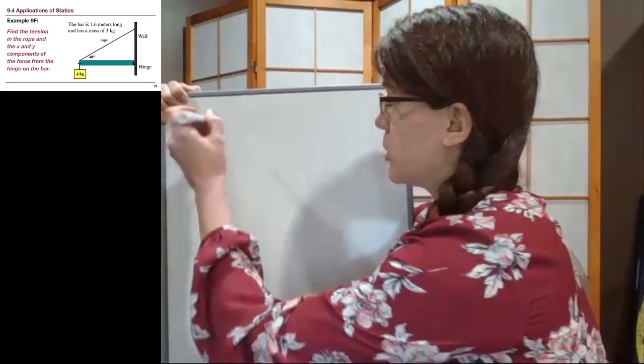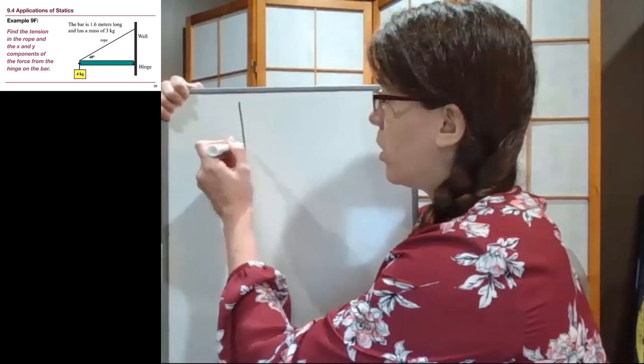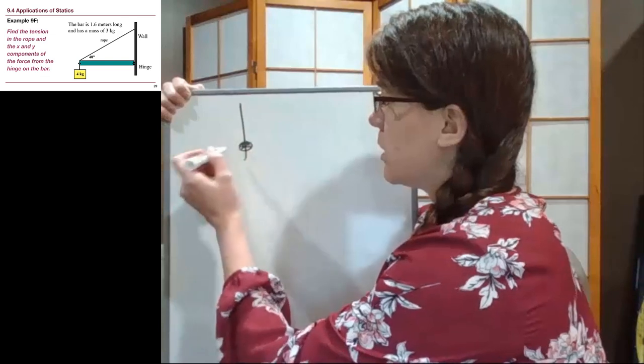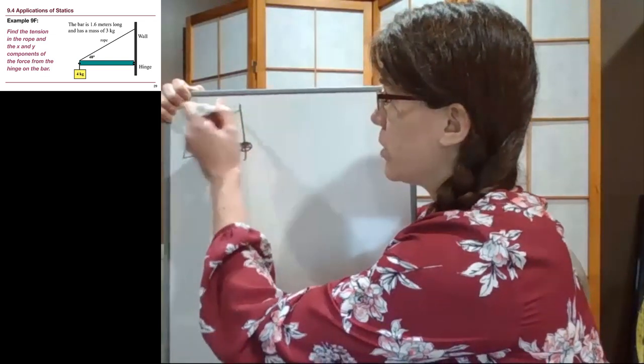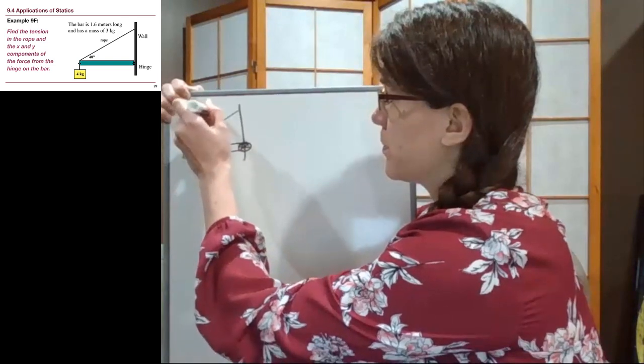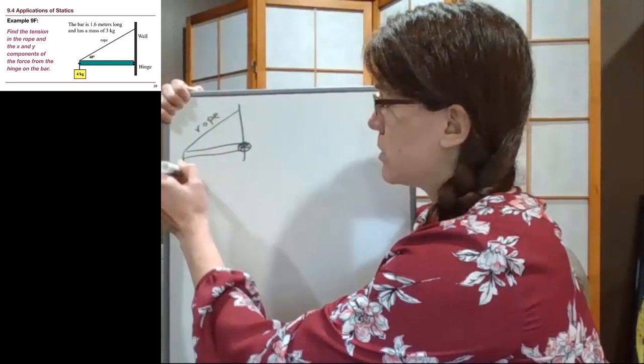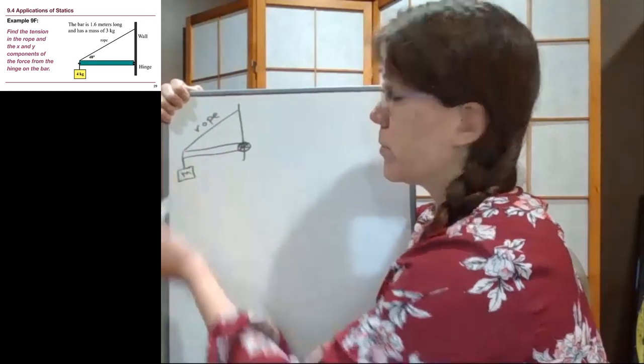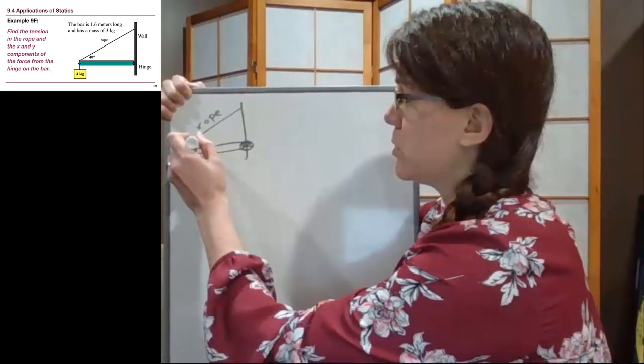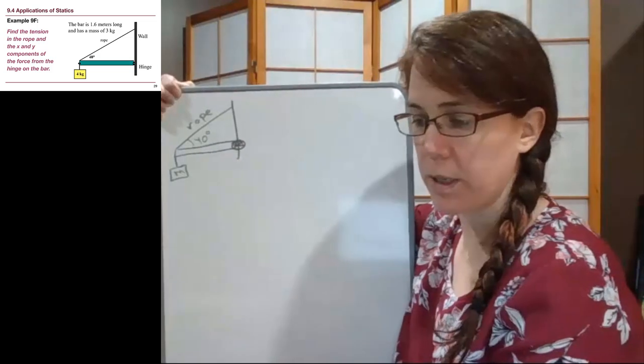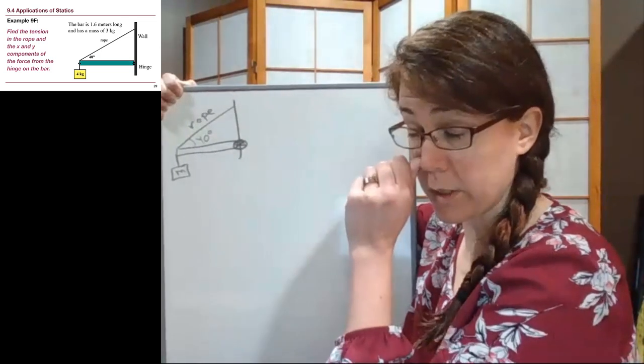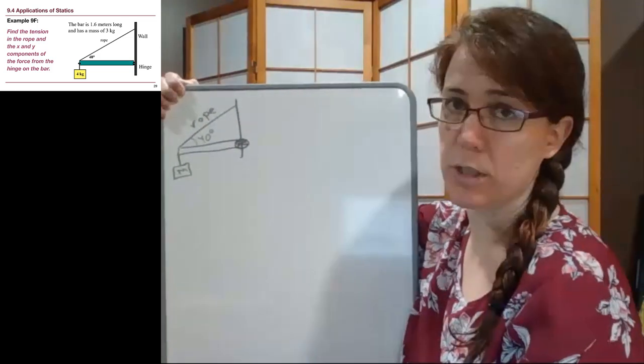So let's draw the real picture here. We have a wall, and the hinge is our axis, and we have this beam here where there is a rope attached, and there is a mass also attached to the beam, and there's a 40 degree angle. Not drawing that very big or being very slow and deliberate about it because it's the same picture that's in our slide.